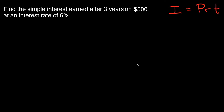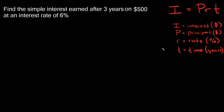The formula for simple interest is I is equal to PRT. I is equal to the interest, in dollars. P is equal to the principal, also a dollar amount. R is equal to rate, which is a percentage, and T is equal to the time, in years.